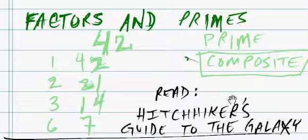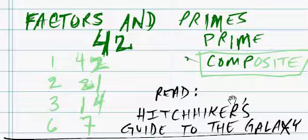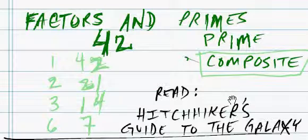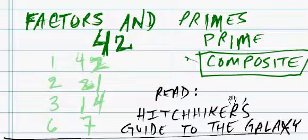In fact, what is the answer to all questions? 42. Our question is whether or not 42 is prime or composite, and knowing that it's already divisible by 2, we know right off the bat it's composite.